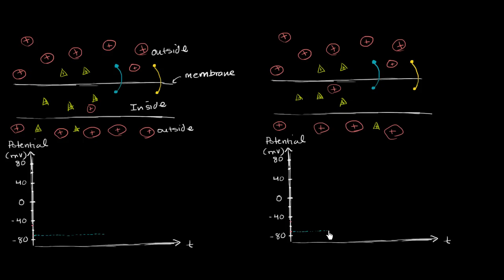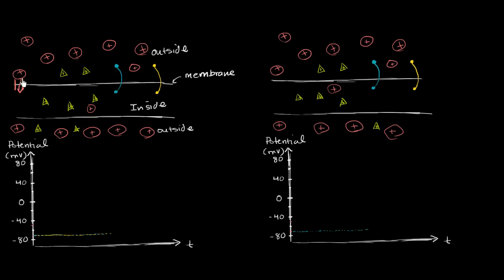We're going to use both of these to describe quite different scenarios. You could have another voltmeter further out, and that's also going to register negative 70 millivolts. Now let's make something interesting happen — let's say that the membrane becomes permeable to sodium, so sodium just starts flooding through.